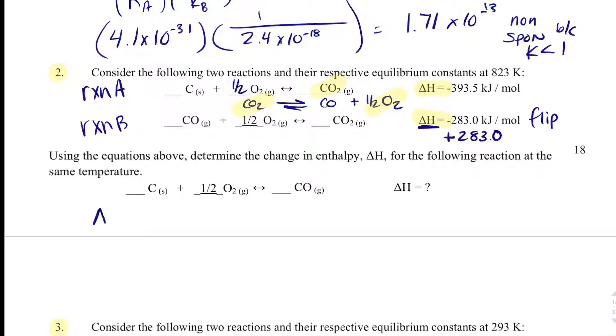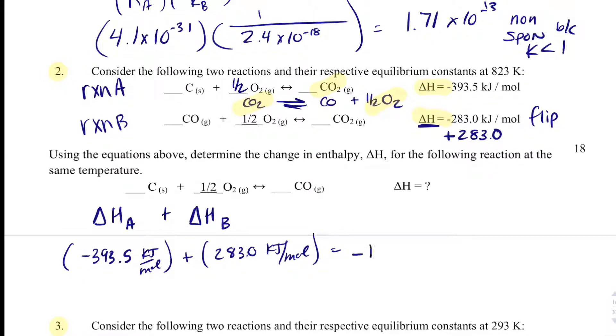I'm going to take delta H of A and just add it to delta H of B. Delta H of A is negative 393.5 kilojoules per mole. Delta H of B is 283.0 kilojoules per mole. When I add those two together, I end up getting negative 110.5 kilojoules per mole, which means that reaction is exothermic.